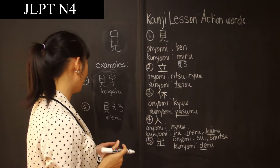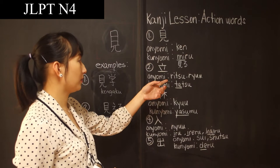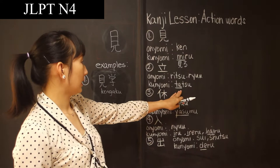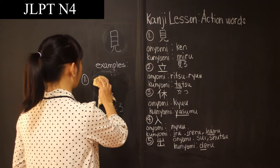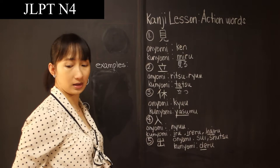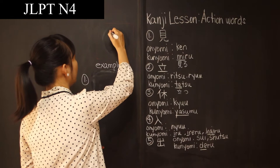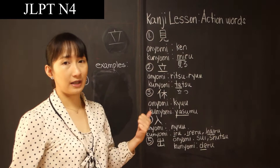The next kanji for today — its onyomi is Ritsu and Ryuu, and its kunyomi is Tatsu. Tatsu no Ta. This is how we write Ritsu, Ryuu, or Tatsu no Ta. One, two, three, four, five. It's kind of small — five strokes only.